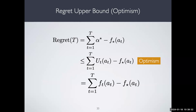In the noisy case, you can only upper bound these differences to something that looks like square root of the statistical dimension of the class times log. When there is noise, you pay square root T times the statistical dimension. When there is no noise, you only pay the complexity of the class.